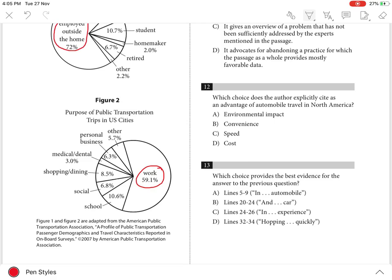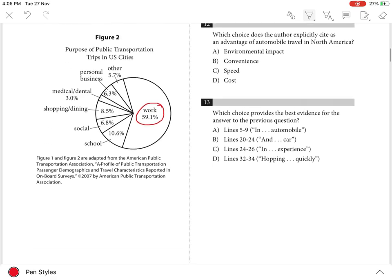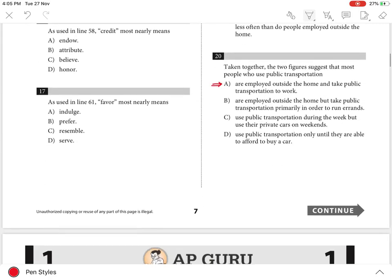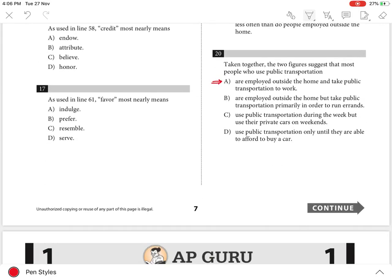that many public transportation passengers take public transportation to their place of employment. Hence, A is correct. Choices B, C, and D are incorrect because Figure 1 and Figure 2 do not indicate that public transportation passengers primarily use the system to run errands, use their own car on weekends, or are planning to purchase a car.